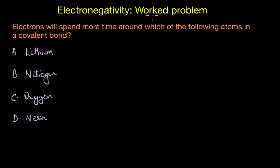In this video we are going to discuss a few problems on electronegativity. The first question asks: electrons will spend more time around which of the following atoms in a covalent bond?